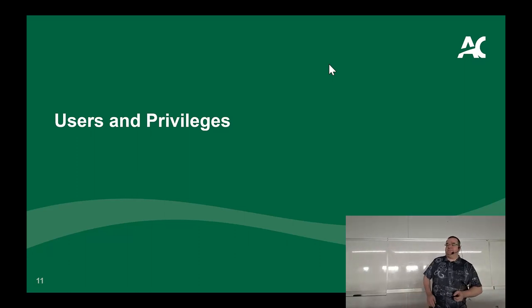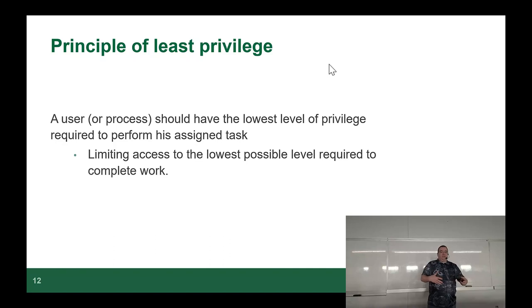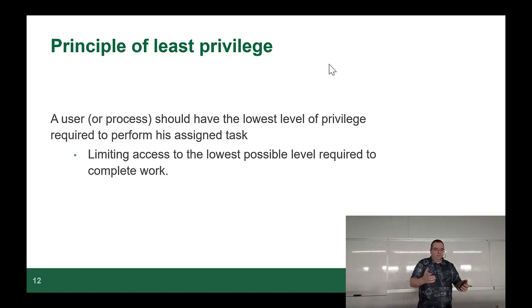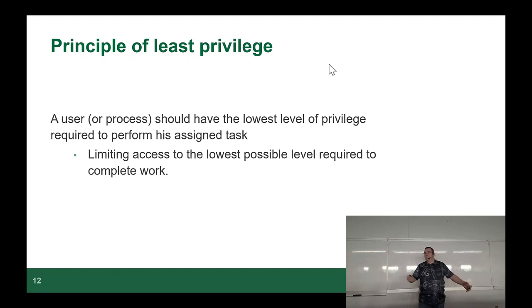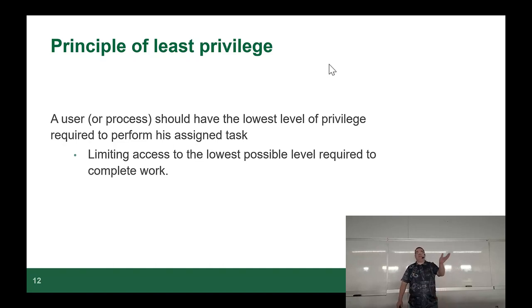A user or process should have the lowest level of privilege required to perform their assigned task - that's the principle of least privilege. Limiting access to the lowest possible level required to work. For example, if a user's job is to read log entries from one table, they shouldn't be able to see anything else. You can give permissions to read from that table and nothing else - they try to do anything else and they just get errors.